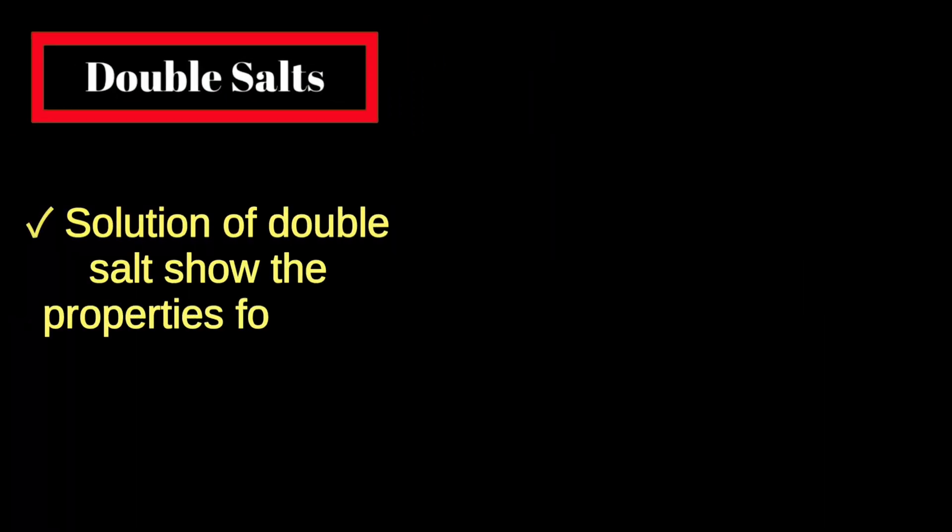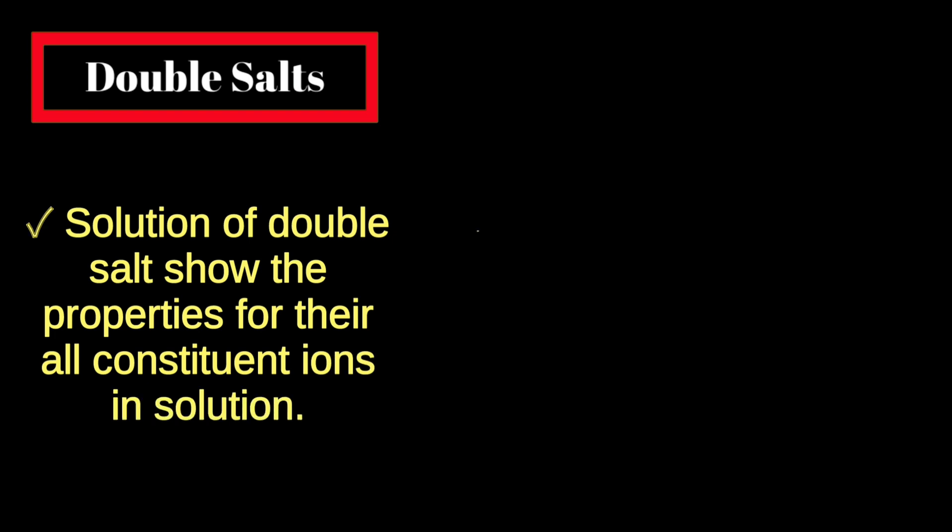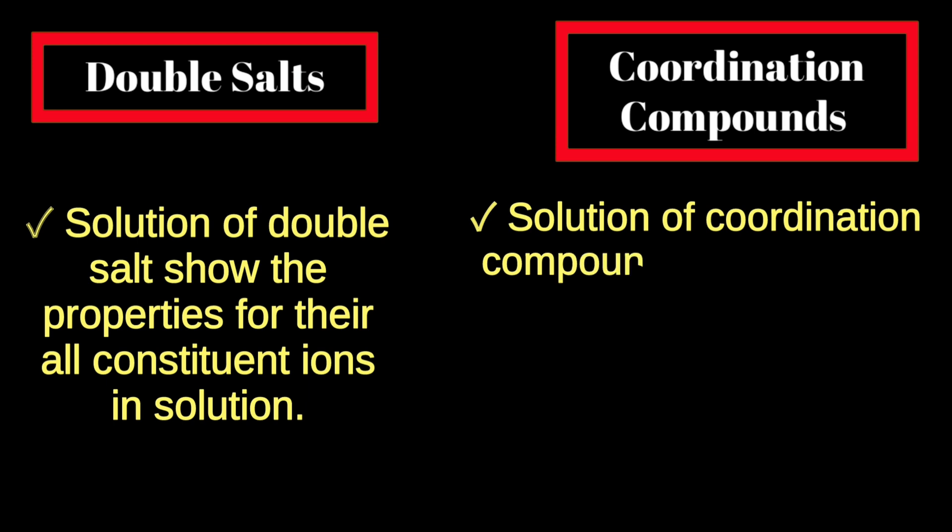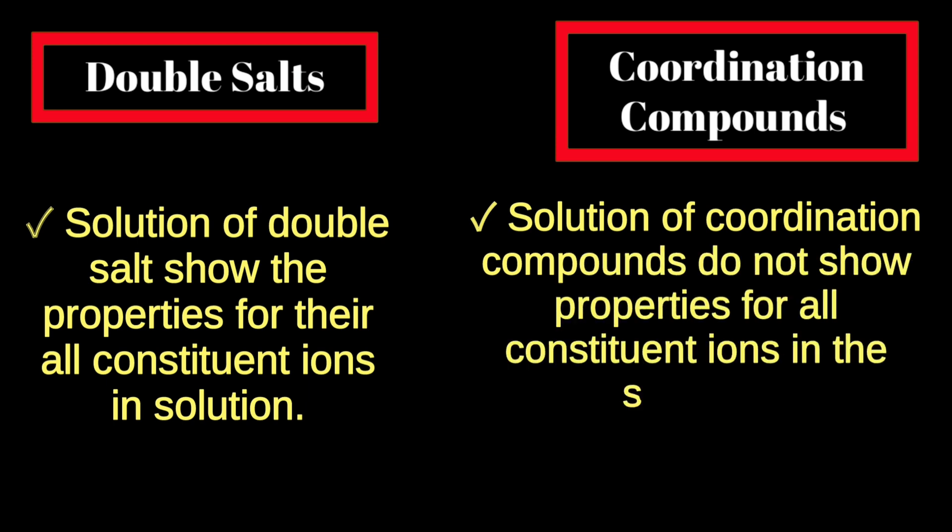Now the third point of difference: the solution of double salt shows the properties for all their constituent ions in solution, while for coordination compounds, the solution does not show the properties for all constituent ions in solution.